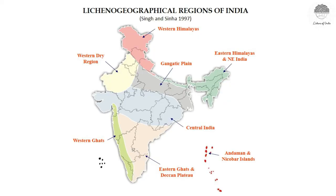Earlier, Parmeliaceae was the most dominant family, but it has been replaced by Graphidaceae because now Graphidaceae includes both Graphidaceae as well as Thelotremataceae under it.